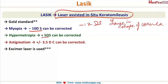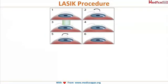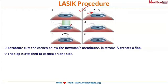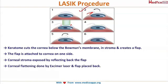In LASIK, a keratome cuts the cornea below Bowman's membrane, eliminating issues of pain and scarring. A flap containing the epithelium and Bowman's membrane is created and lifted but remains attached on one side. The underlying stroma is exposed and ablated by the excimer laser. Once ablation is complete, the flap is placed back in its anatomical position and heals naturally.